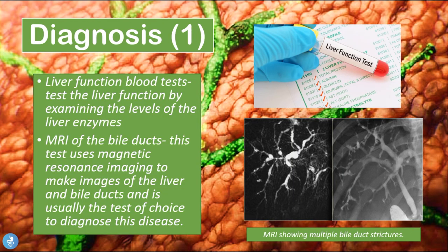So how can one go about diagnosing PSC? The first thing we can do is a liver function blood test, which examines the levels of liver enzymes — usually these will be elevated in PSC patients. We can also do an MRI of the bile ducts, which uses magnetic resonance imaging to create images of the liver and bile ducts, and this is usually the test of choice to diagnose this disease. In this MRI image we can see multiple bile duct strictures — those various points of narrowing within the biliary system — which allows us to put a diagnosis of PSC.